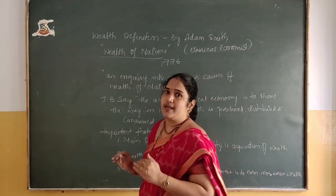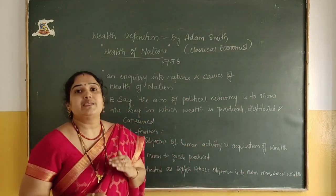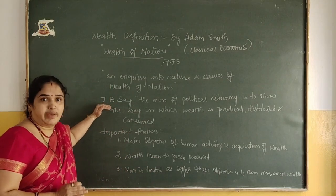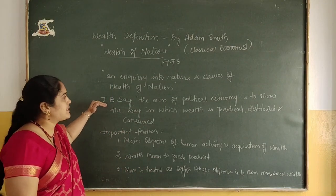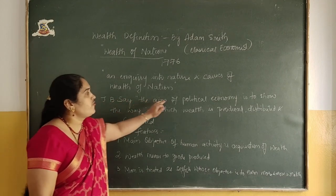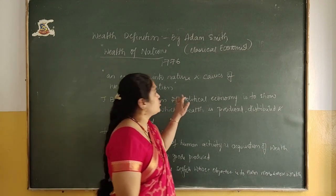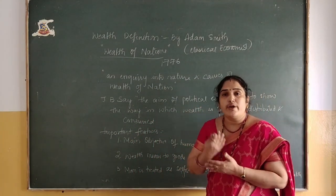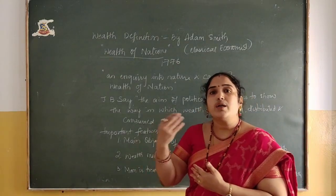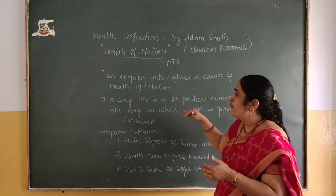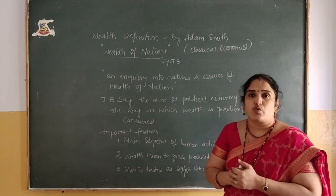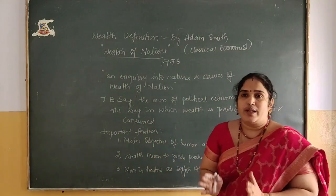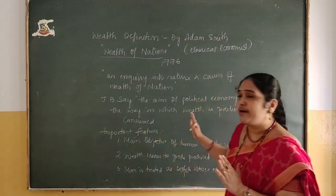Along with Adam Smith, other classical economists also regarded economics as a study of wealth. J.B. Say also defined economics as: 'the aim of political economy is to show the way in which wealth is produced, distributed and consumed' — how goods are produced, distributed and consumed. The main aim of economic activity is to produce wealth. Only goods which are produced and are tangible — which can be seen and measured — are regarded as wealth.